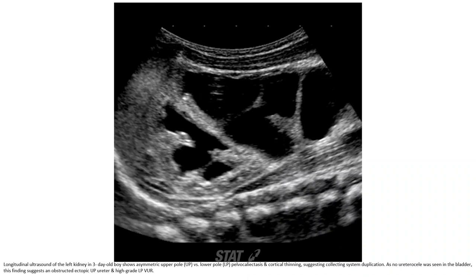Ultrasound of the left kidney shows asymmetric upper pole versus lower pole pelvocaliectasis and cortical thinning, suggesting collecting system duplication. As no ureterocele was seen in the bladder, this finding suggests a non-obstructive ectopic ureter and lower pole VUR (LP-VUR).